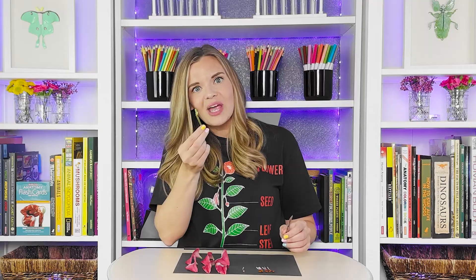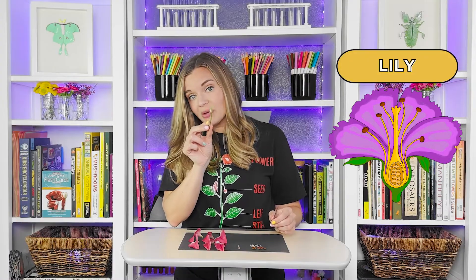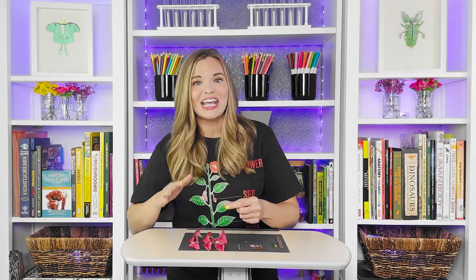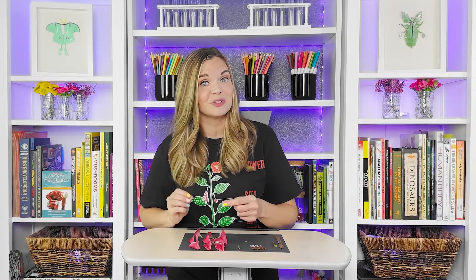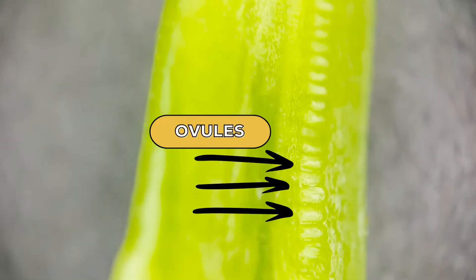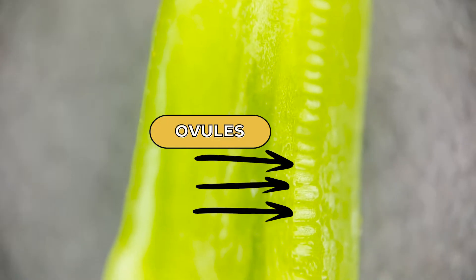This is all we have left. But if we open up this part, we can see the ovary. This part of the flower contains the female reproductive cells called ovules, which are fertilized by the pollen.